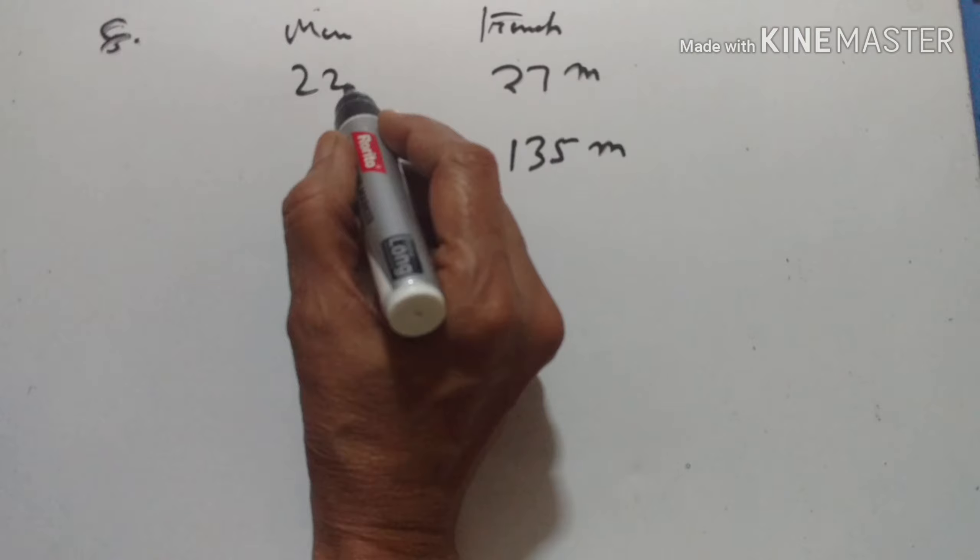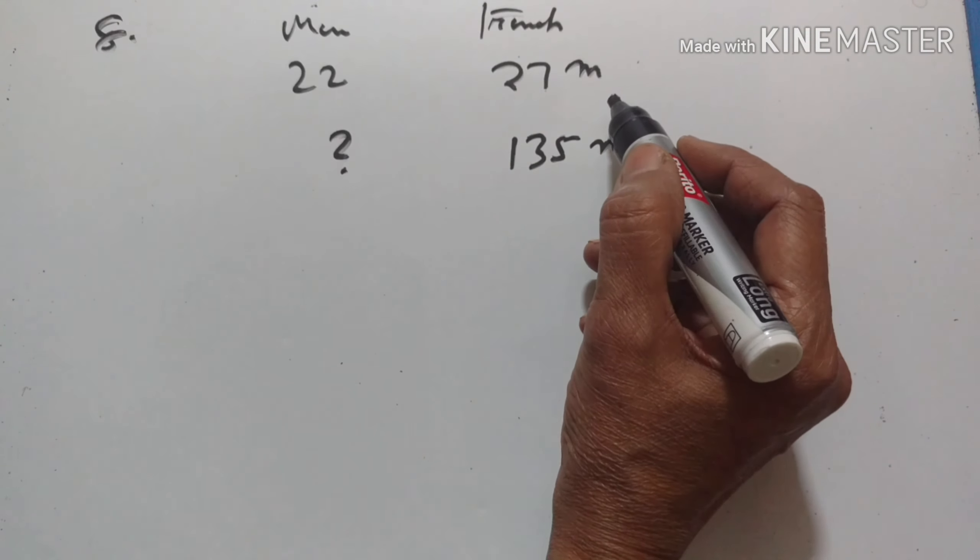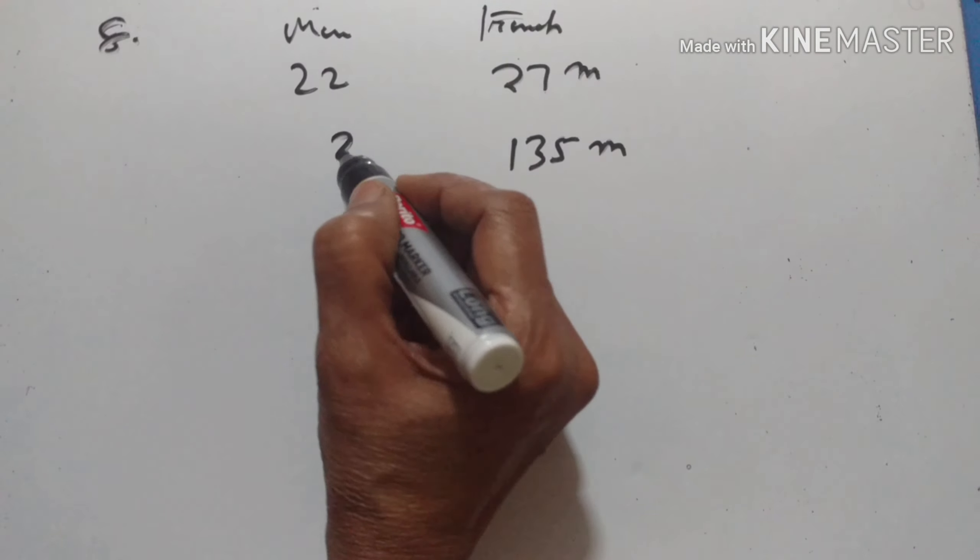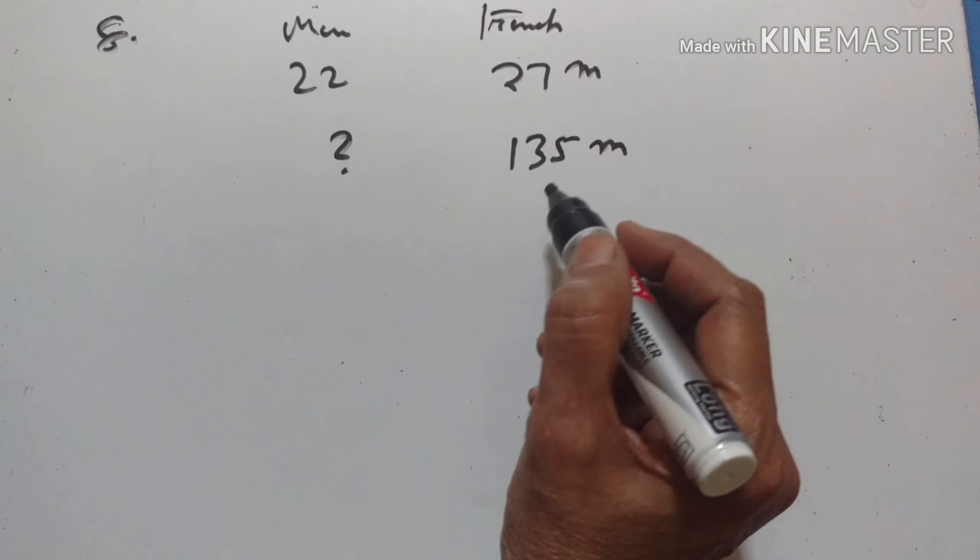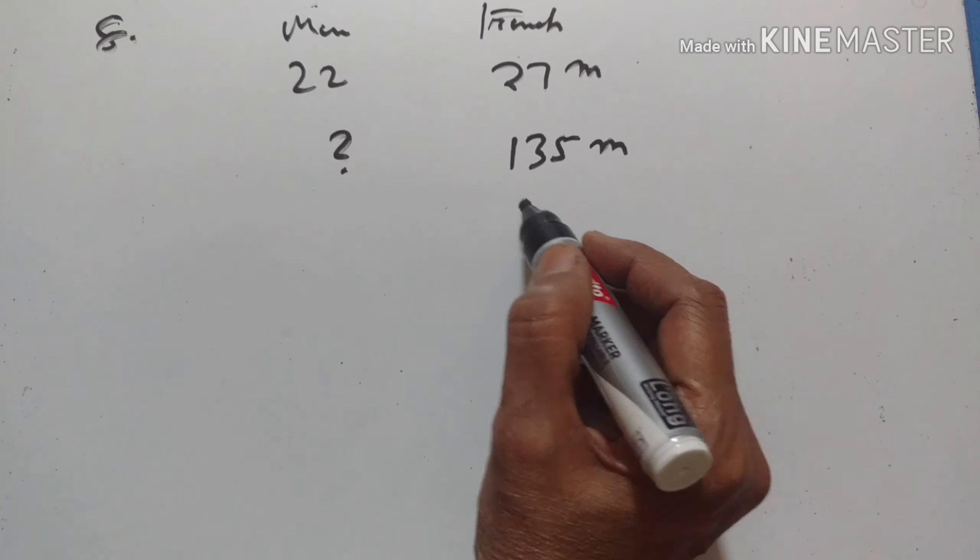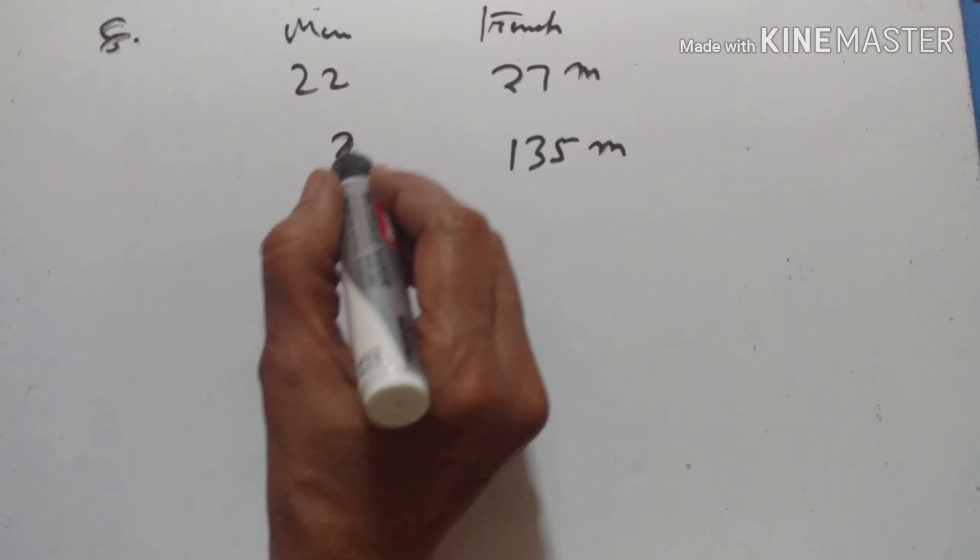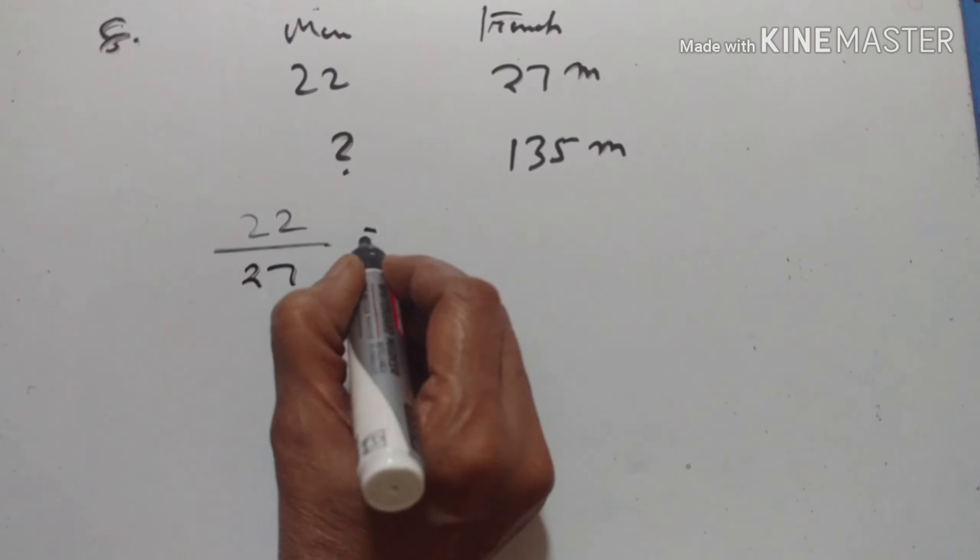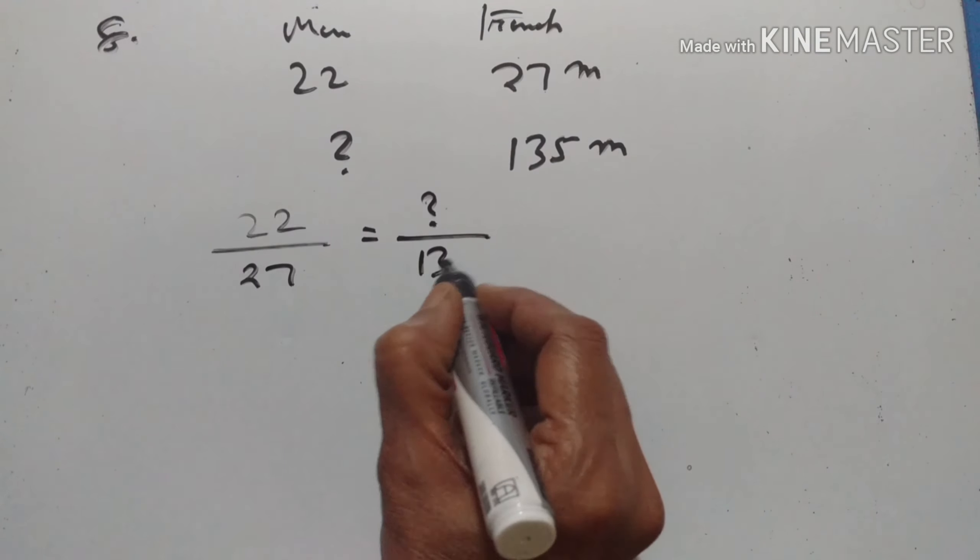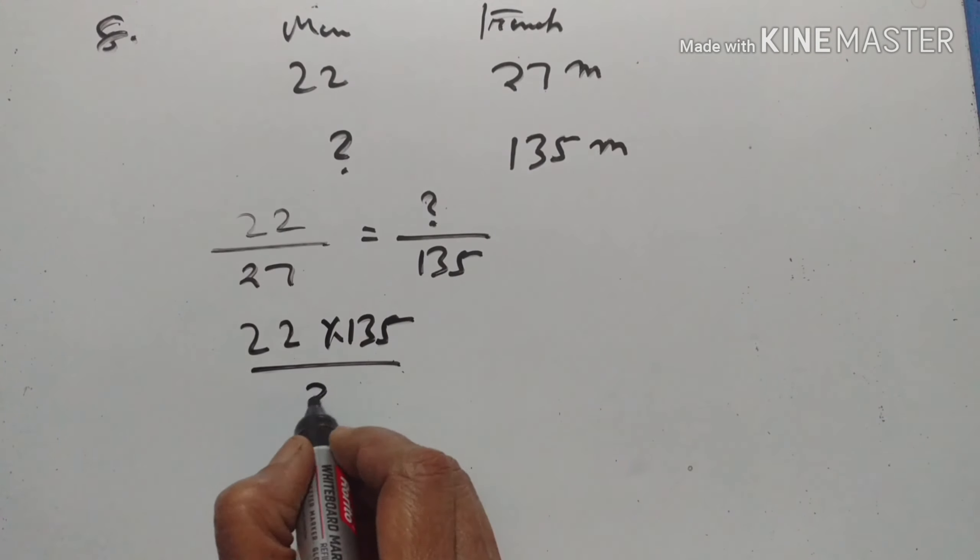8th problem. 22 men can dig a 27 meter long trench in one day. How many men should be employed for digging 135 meter long trench of the same type in one day? So more men are needed. So this is direct variation. Therefore, X1 upon Y1 is equal to X2 upon Y2. 22 into 135 divided by 27.